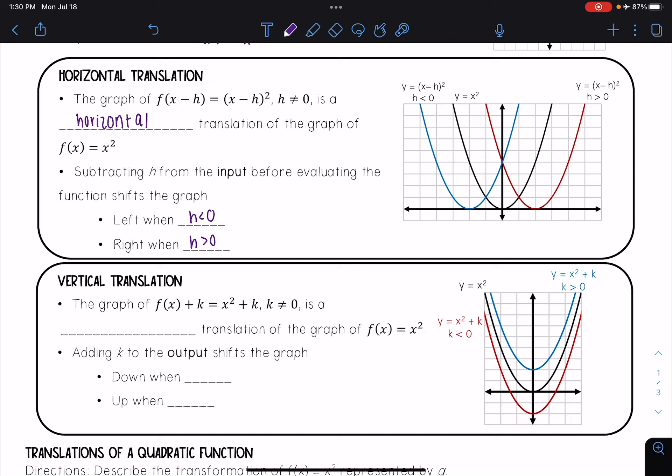That means, just like we saw with linear and absolute value functions, it's going to go left when it says (x + h)² and right when it's (x - h)². If you see a plus h in the parentheses, that's going left. If you see a minus h in the parentheses, that means you're going right. So it's kind of opposite of what you would think.